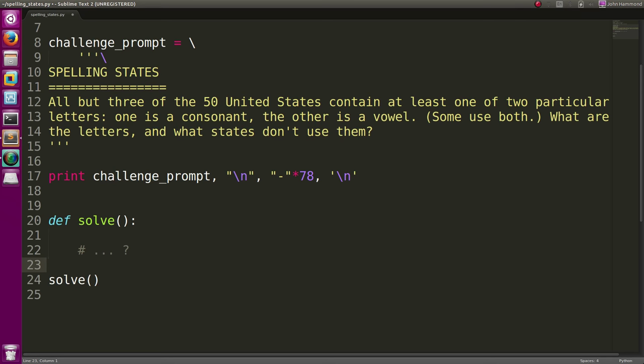It says all but three of the 50 United States contain at least one of two particular letters, one being a consonant and the other being a vowel. Some states may use both. So what are these letters, and what states don't use them?